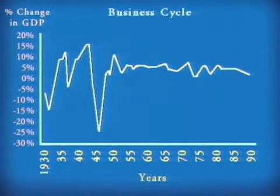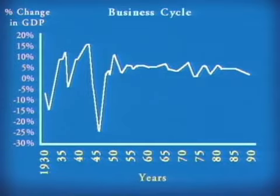Since World War II, the American economy has seen eight recessions, defined as two quarters of negative growth. The graph suggests that since the Depression of the 1930s and World War II, the economy has become more stable. Despite efforts, however, policymakers have been unable to eliminate the business cycle. Why? First, there's no consensus regarding the proper policy. Should government use fiscal policy — government's power to tax and spend — or monetary policy — government's powers over the money supply — or both?